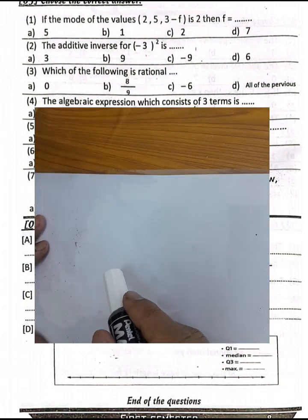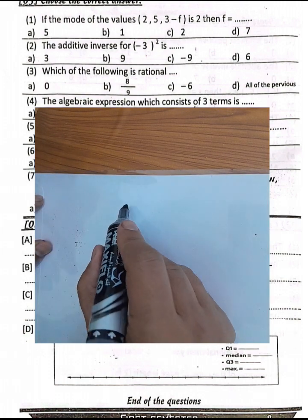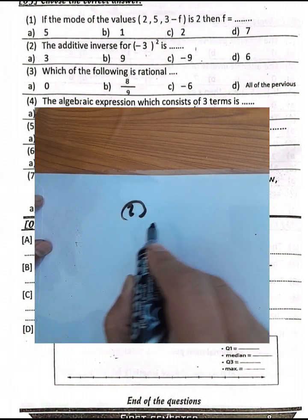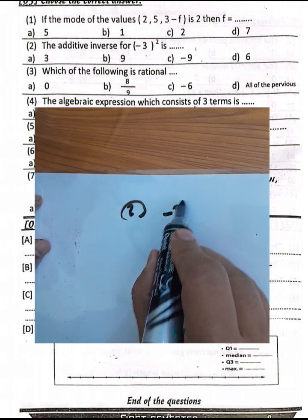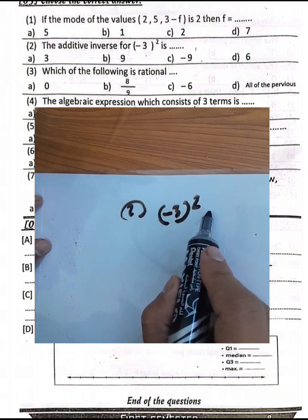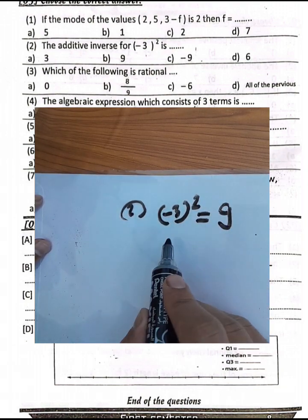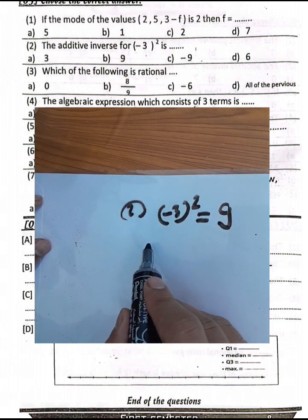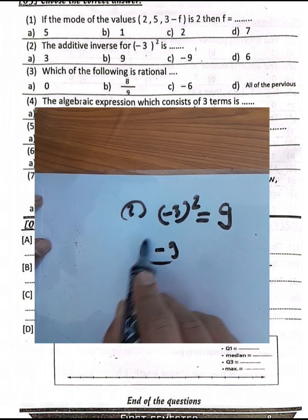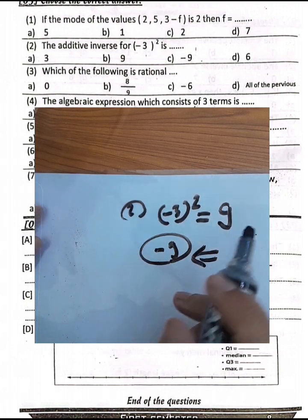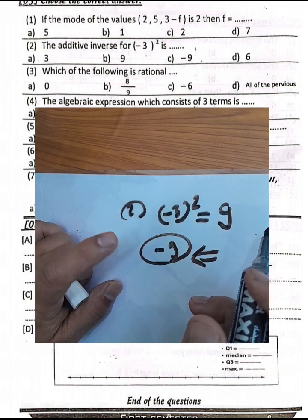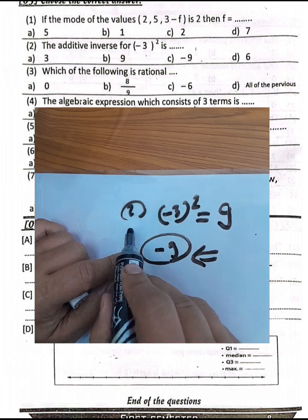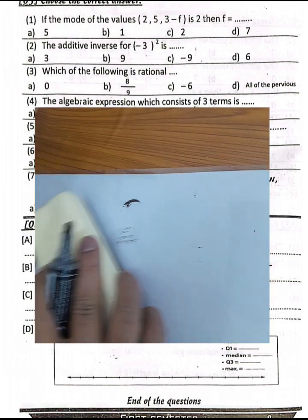MCQ question number 2: find the additive inverse of negative 3 squared. Negative 3 squared equals 9 (negative times negative equals positive, 3 times 3 equals 9). The additive inverse of 9 is negative 9. The answer is letter C, negative 9.